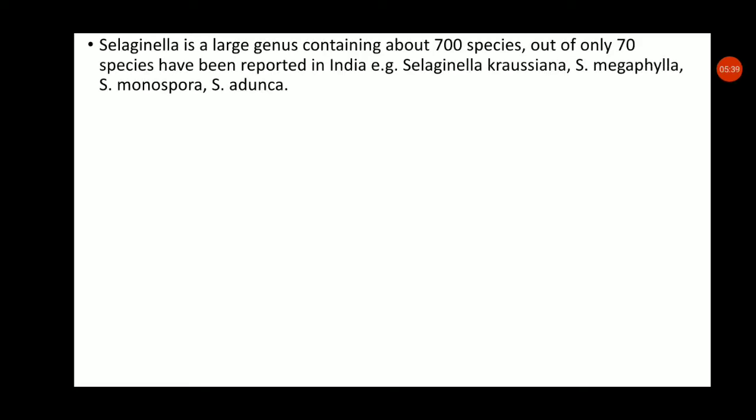Selaginella is a large genus containing about 700 species worldwide. Out of these, approximately 70 species have been reported in India, including Selaginella chrysocaulos, Selaginella megaphylla, Selaginella monospora, and others.